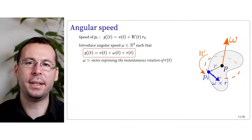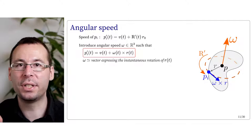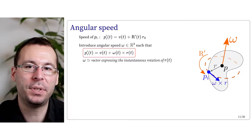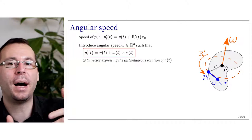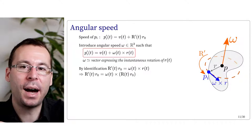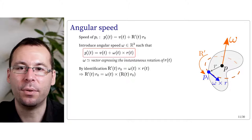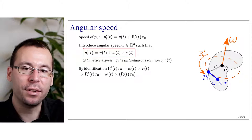We define the angular velocity omega such that Pi'(t) equals V(t) plus omega cross R(t). By identification, R'(t) times R0 equals omega cross R(t), and since R(t) equals R times R0, the derivative of the rotation matrix times R0 equals the cross product between the angular velocity and the rotation times R0. Since a cross product can be represented as an anti-symmetric matrix, we associate to the angular velocity its matrix representation omega-hat corresponding to its anti-symmetric matrix.